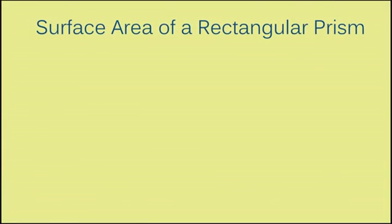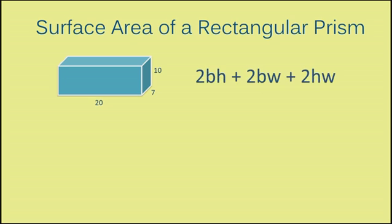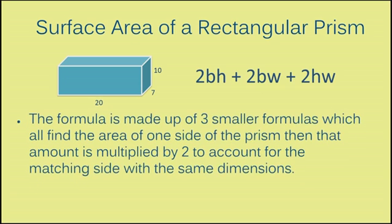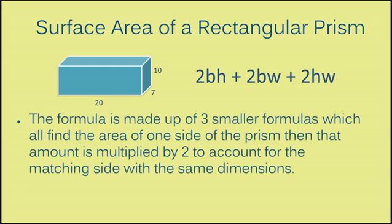Surface Area of a Rectangular Prism. To find the surface area of a rectangular prism, you want to use the formula 2BH plus 2BW plus 2HW. The formula is made up of three smaller formulas which all find the area of one side of the prism, then that amount is multiplied by 2 to account for the matching side with the same dimensions.